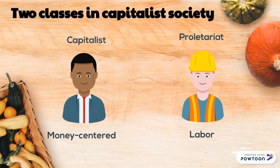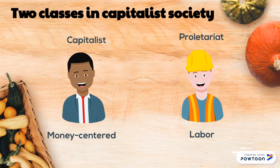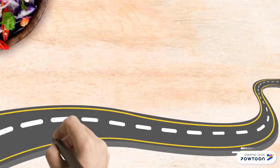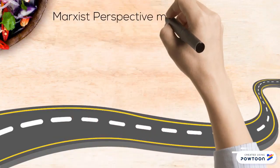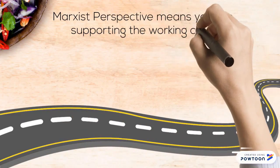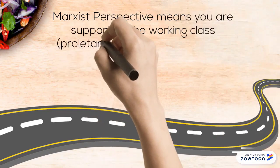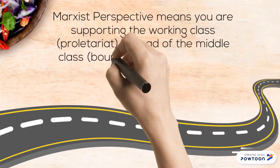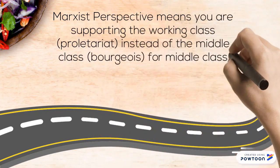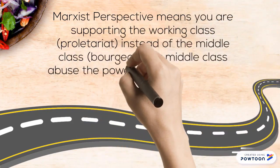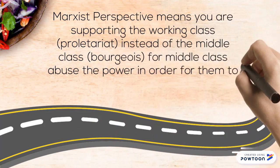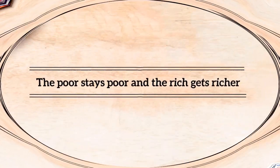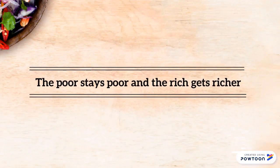Karl Marx recognized that there are only two classes in capitalist society. The Marxist perspective means supporting the working class instead of the middle class, as the middle class abuses power in order to become wealthier — the poor stays poor and the rich gets richer.